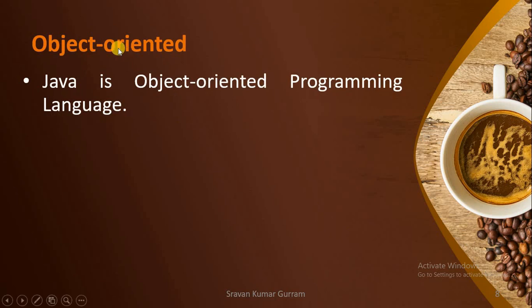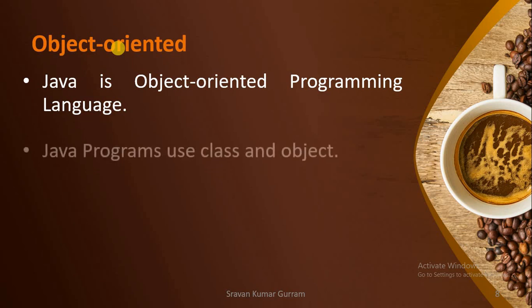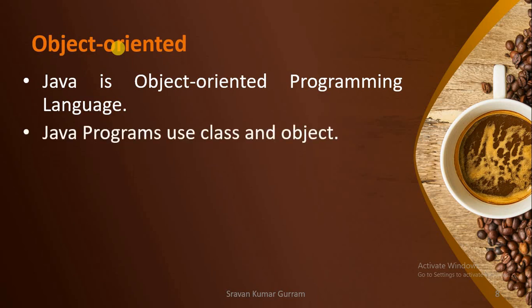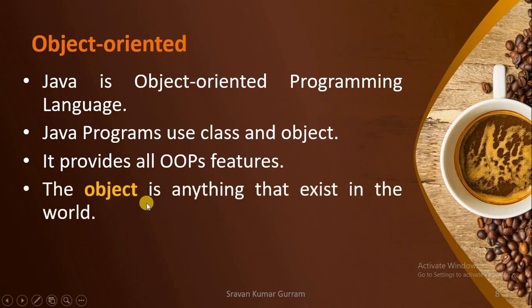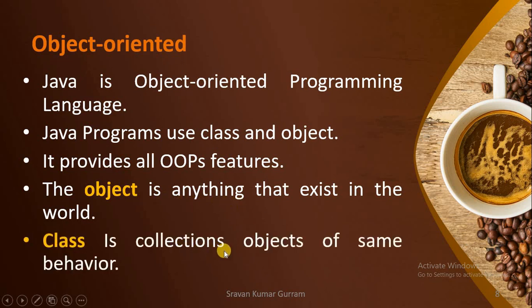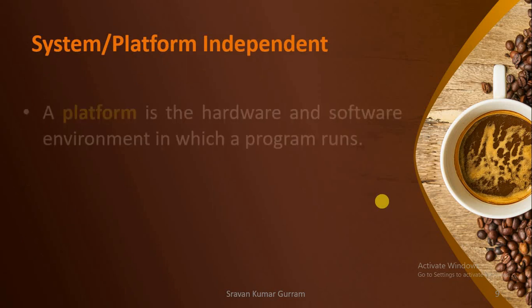The next advantage is object oriented. Java is an object oriented programming language. It uses class and object concepts and supports all the OOP features. An object is something which has physical existence in the world, and a class is a collection of objects of the same behavior — a collection of objects that share similar behaviors.